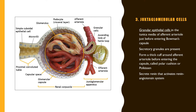In the area where the thick ascending limb of the loop of Henle comes in close contact with the afferent arteriole, the tunica media of the afferent arteriole has myoepithelial cells containing granules. These cells are called juxtaglomerular cells, or JG cells. These granules contain the enzyme renin, which activates the renin-angiotensin system. The juxtaglomerular cells form a thick cuff around the afferent arteriole before it enters the capsule, called the polar cushion.